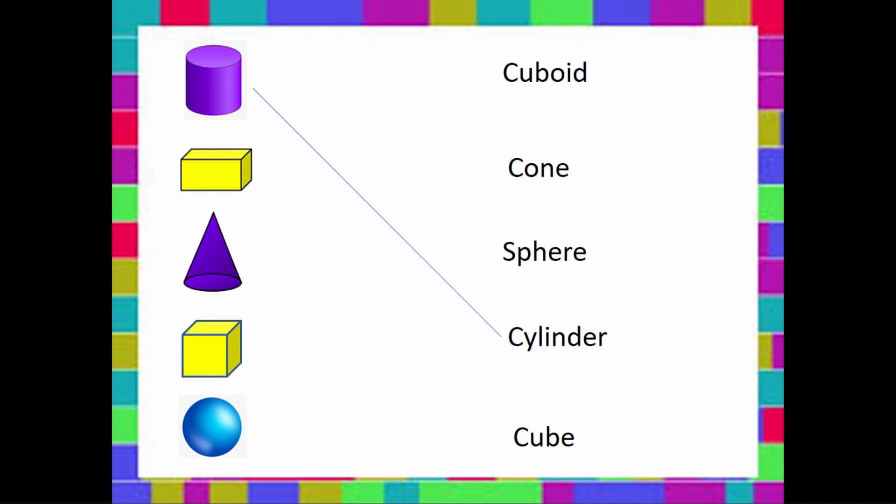Let's look at our next shape. Is it a cuboid? Is it a cone? Is it a sphere? Or is it a cube? We know it's not a cylinder.